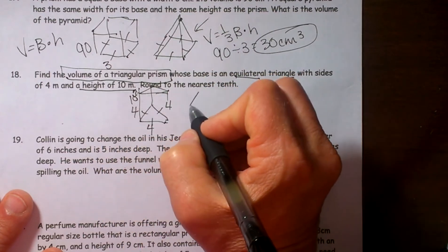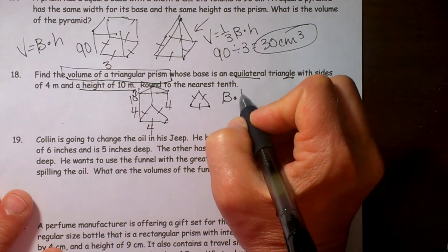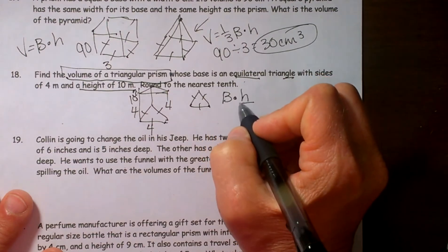Let's concentrate on this equilateral triangle first. We know we have to find the base area first, then we multiply by the height, which is ten.